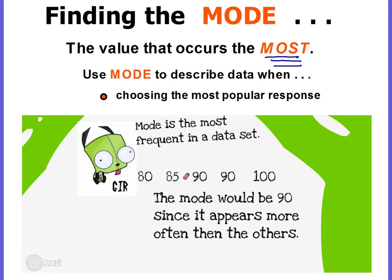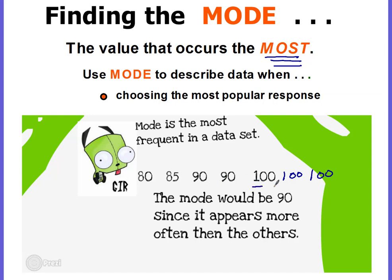What happens if I add another 100? Now you would have two modes. You would have 90 and also 100 because they both appear more than the 80 and the 85, and they both appear twice. So there would be two modes, and it's okay to have two modes — you would just say 90 and 100. But if I added yet another 100, then the mode would no longer be 90. Instead it would be 100 because there are three 100s, and 100 appears more times than any of the other numbers.